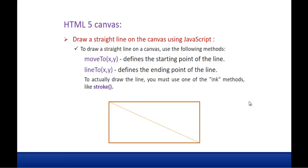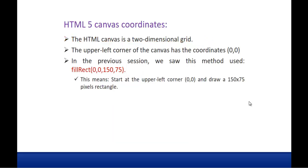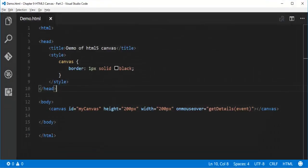In this session we are going to learn how to draw a straight line on the canvas using JavaScript. Before that, let me show you how to identify or get the coordinates of a rectangle or any shape with the help of JavaScript. It's very simple — let me jump into Visual Studio Code and show you a demo.